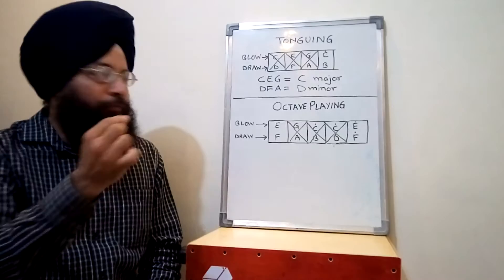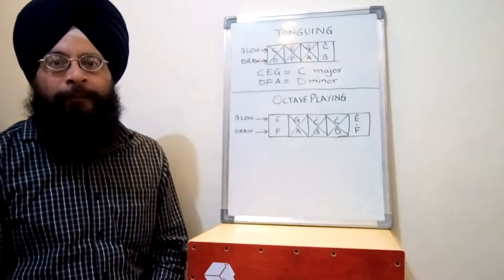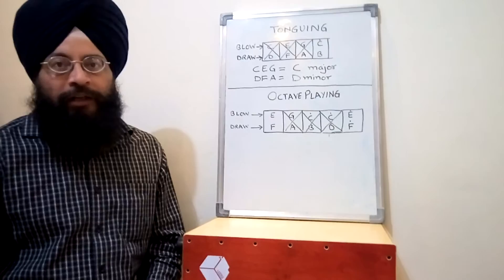If one of the notes is out of tune, then it will sound very bad. So this is just a brief idea about tonguing and octave playing. I hope I am able to clear my point on octave and tonguing. I will be there with my next video very soon. Thank you.